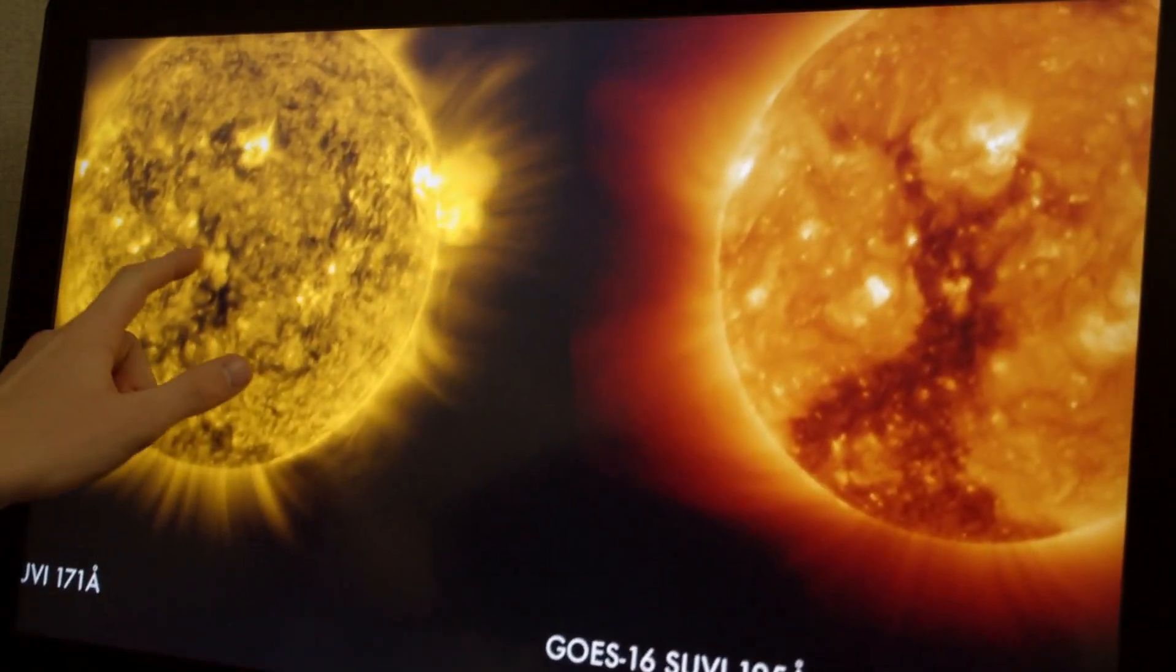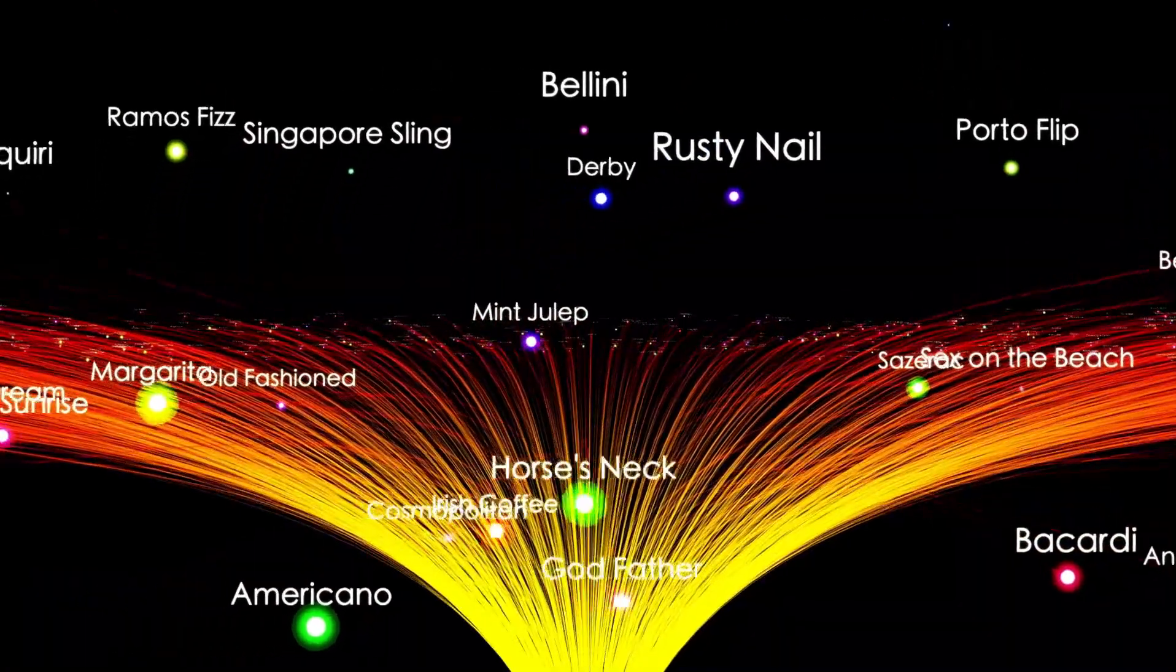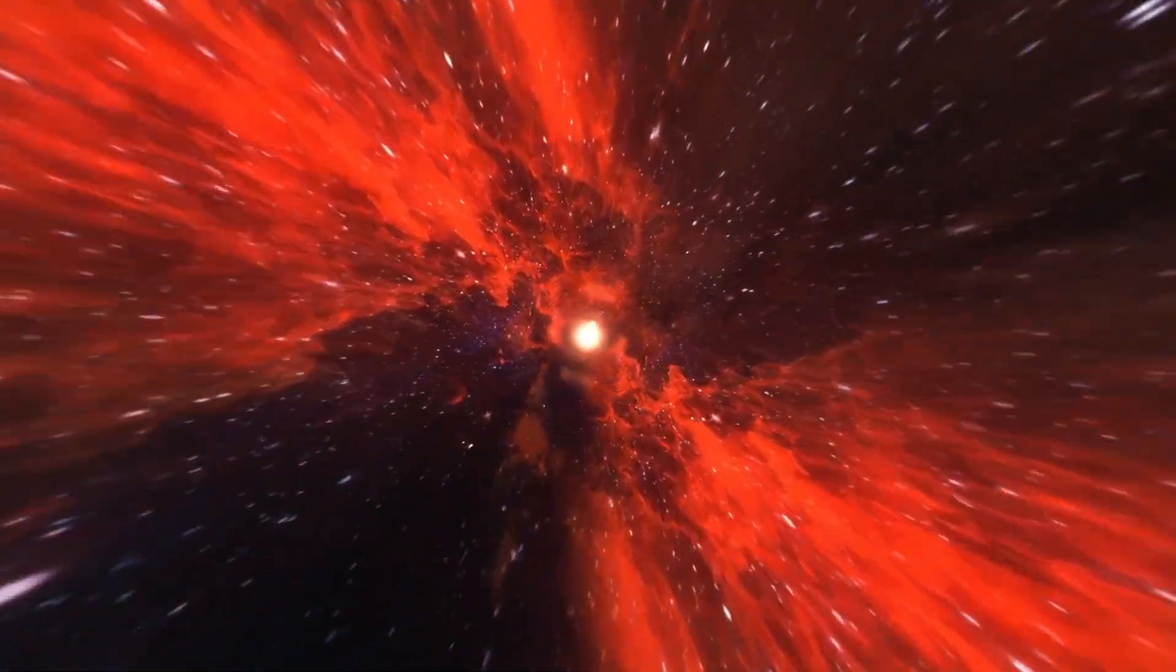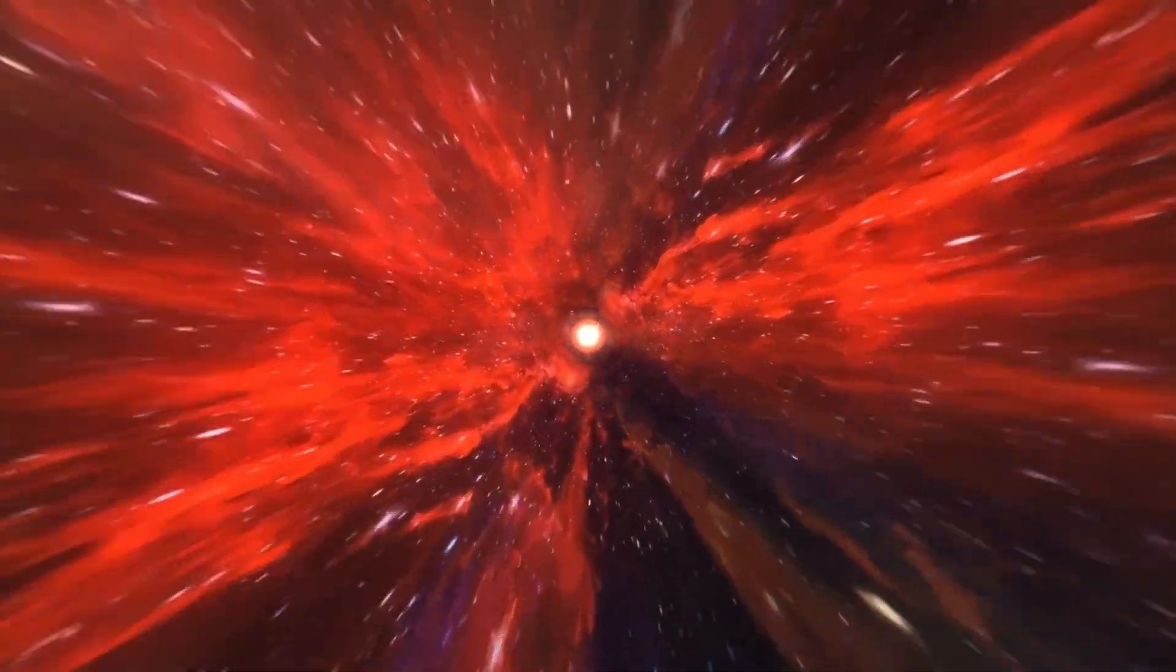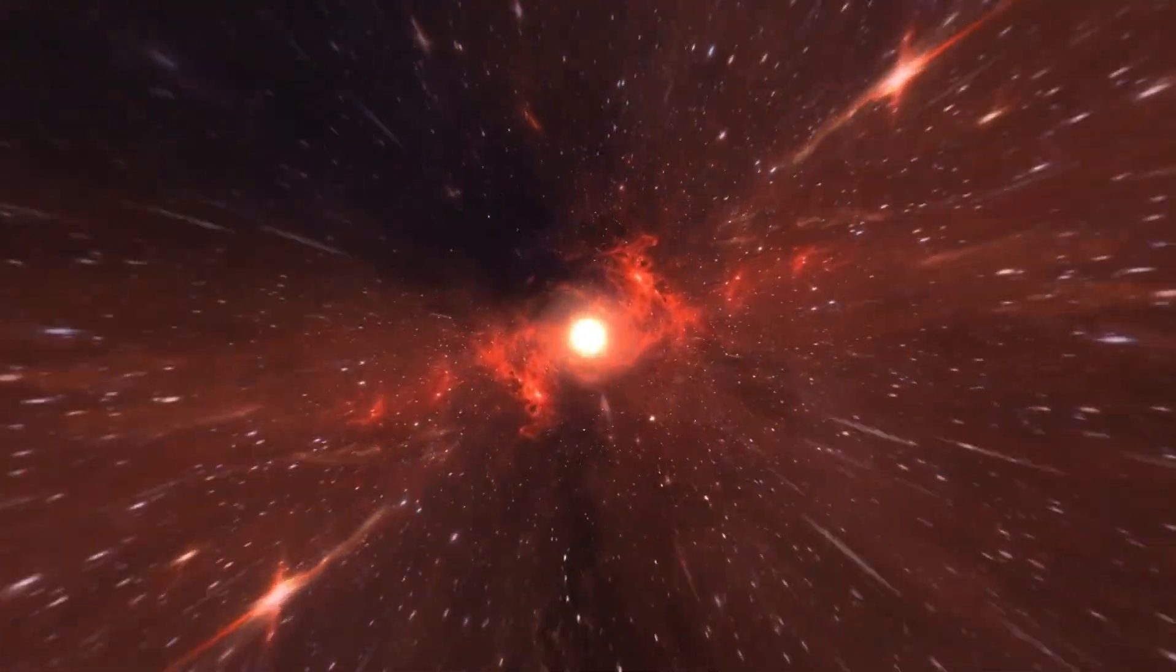The recent brightening of Betelgeuse also raises new questions about the inner workings of red supergiants. These stars are notoriously unpredictable due to their immense size and complex internal dynamics, which create turbulent conditions that challenge even the most advanced models. Betelgeuse, in particular, has puzzled astronomers for years with its irregular light patterns.